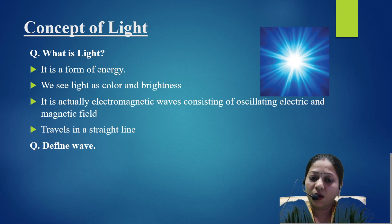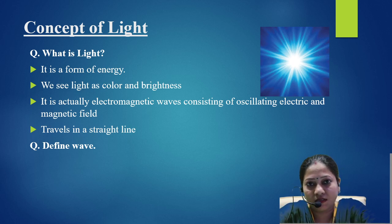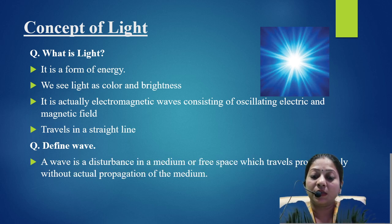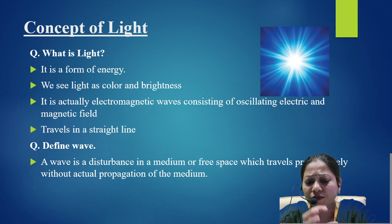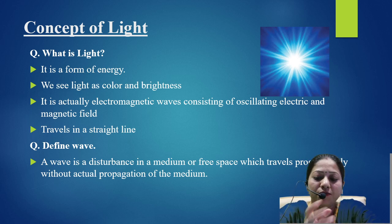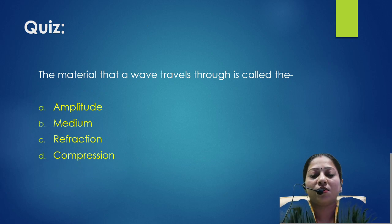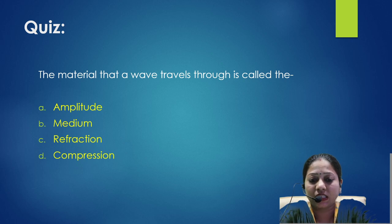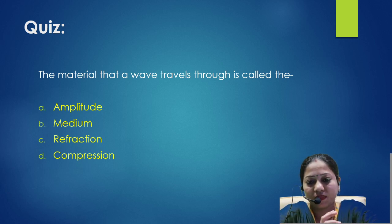So what is a wave? A wave is a propagating disturbance in a medium or free space which travels progressively without the actual transport of the medium. This applies whether it is a light wave, sound wave, or radio wave — all are propagating disturbances in a medium or free space. Now for a quiz: pause the video and think — the material that a wave travels through is called the amplitude, medium, refraction, or compression?